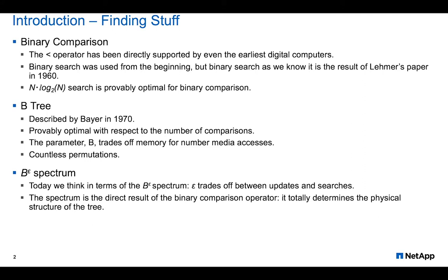Finding stuff has been a problem since the beginning of computing and the binary comparison operator has been at the heart of it from the start. This is because even the earliest computers had direct support for binary comparison in the form of a machine instruction. Binary comparison as we know today was first described in 1960, but a form of it has been known from the very beginning, and it's a well-known result that the best one can do with binary comparison is n log n when searching.